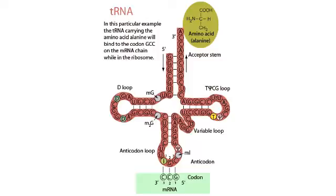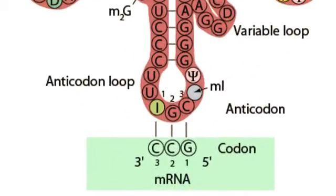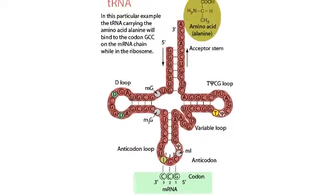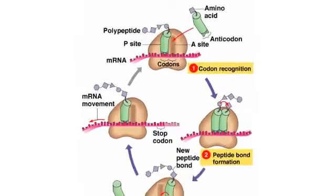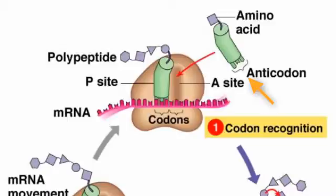tRNAs are like mRNAs in that they are composed of nucleic acids, but their specific job is to act as a shuttle or carrier for amino acids. These tRNA molecules are often represented as small cloverleaf-looking molecules that have a portion of the RNA poking off to the inferior part, consisting of three nucleotides. On the opposite side of the molecule is a region specific for holding amino acids. The portion on the bottom with the three exposed nucleotides is referred to as the anticodon.